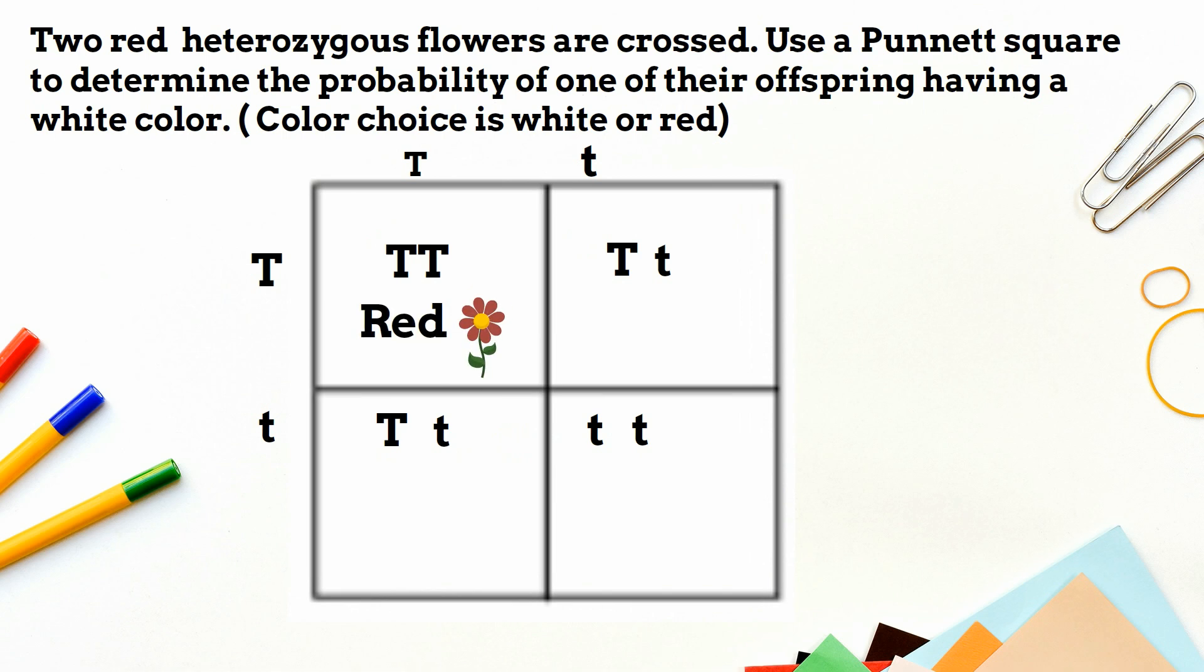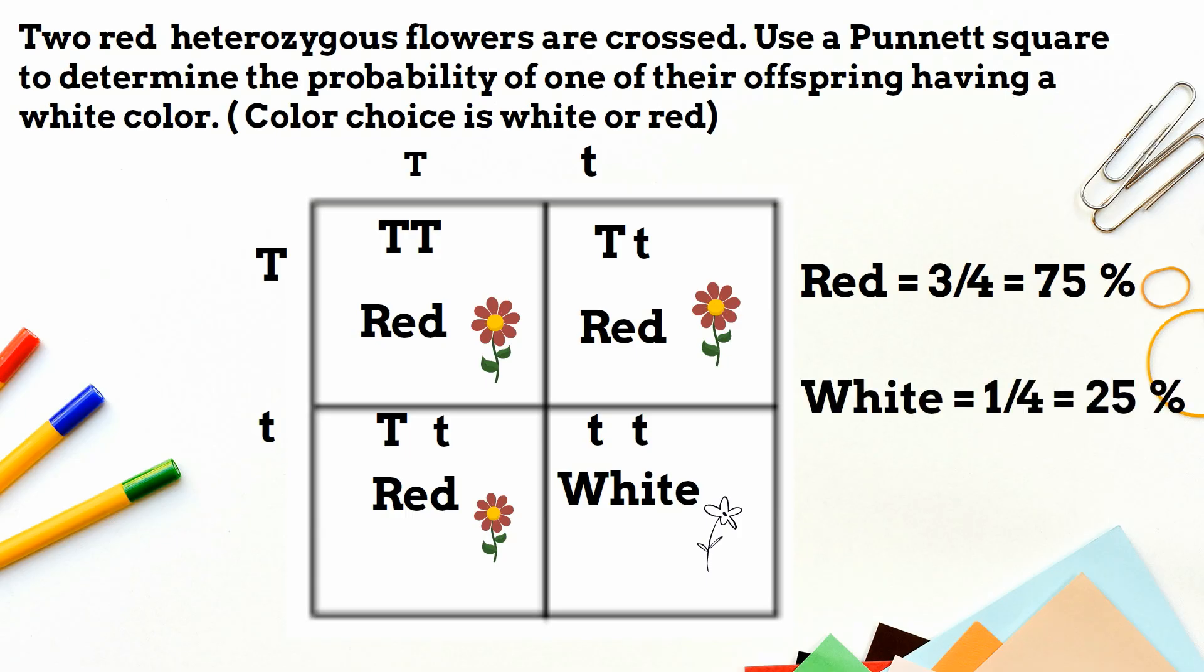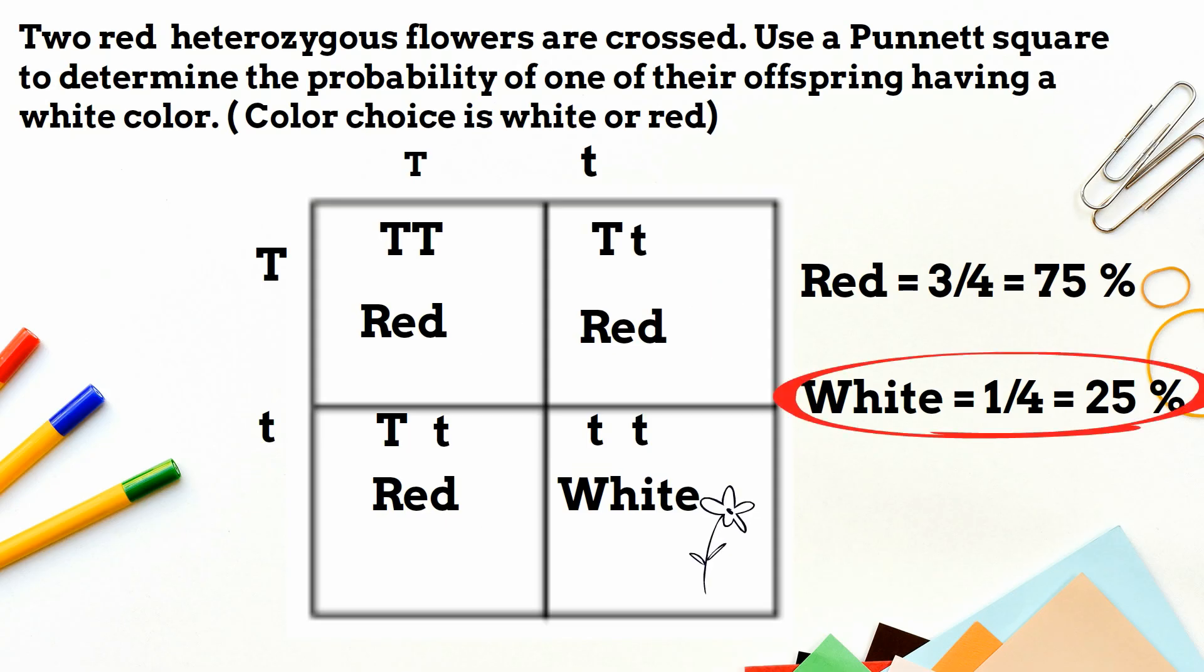So we have dominant, dominant, dominant, and then this is recessive. So the dominant is 3 out of 4, or 75%, and the recessive is 1 out of 4, which is 25%. So the answer to the original question would be 25%, you'll have a white flower.